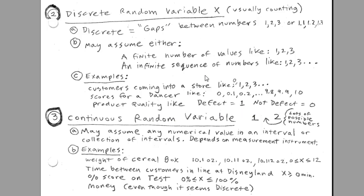Now, the discrete random variables we're going to be talking about in this chapter. Chapter 6, our next chapter, we'll talk about continuous random variable. We may assume any numerical value in an interval or collection of intervals. Depends on the measurement instrument. Weight of cereal. Time between customers in line at Disneyland. Percentage score on a test or even money. Now, money may seem like it's discrete, right? 1 penny, 2 penny, 3 penny. But there's lots of situations where money depends on the measuring instrument or you have fractions of pennies.